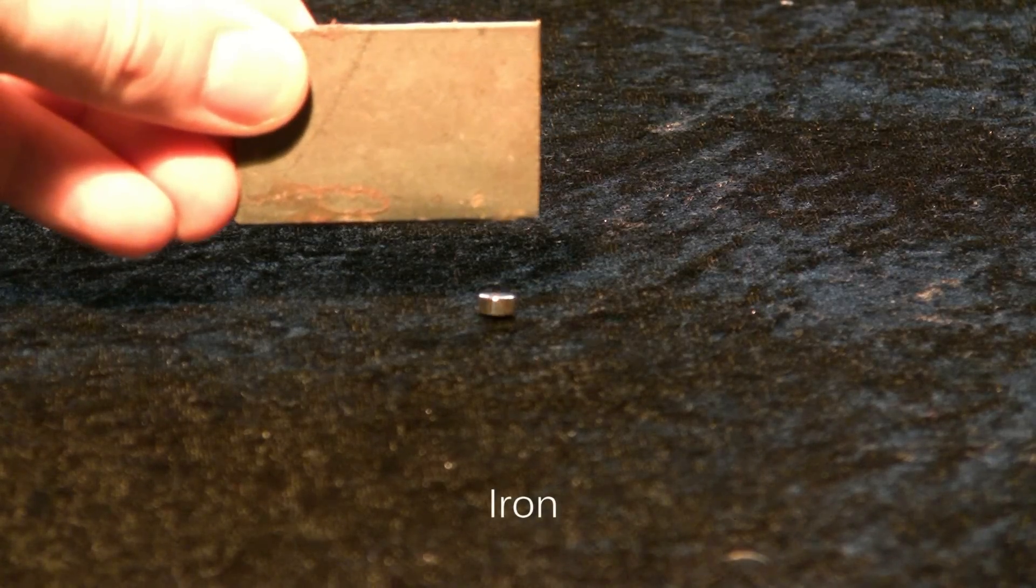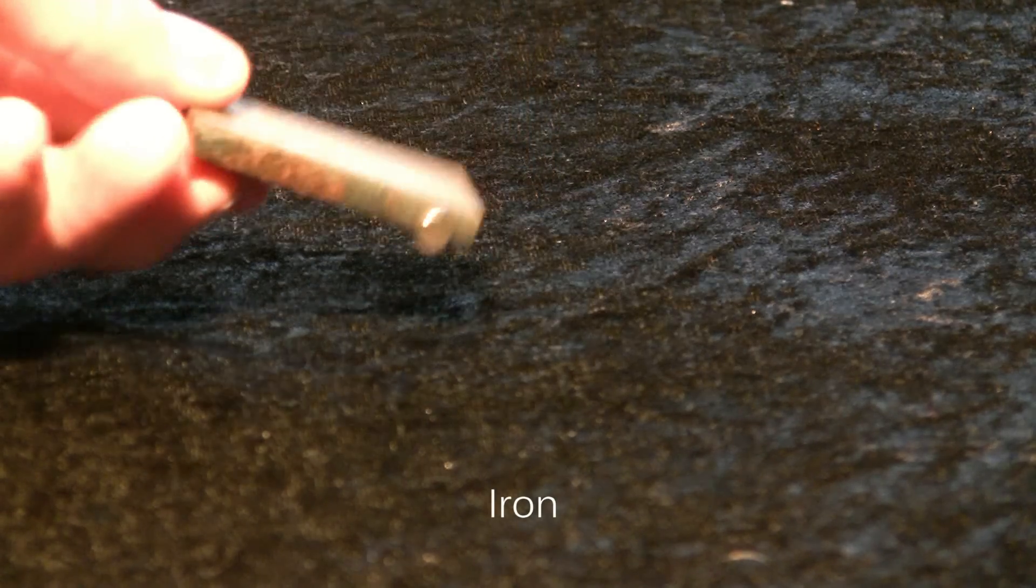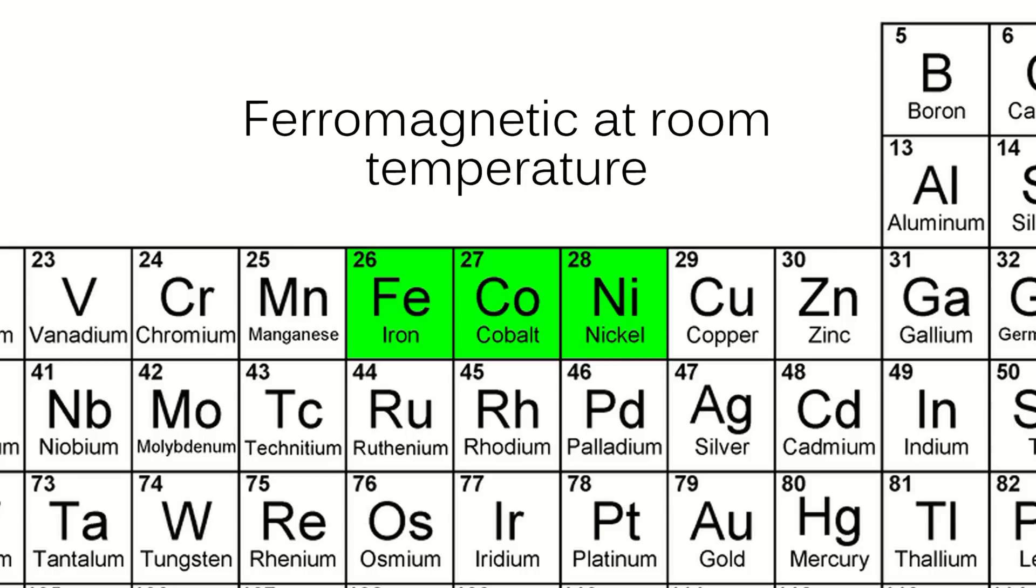Let's start with a simple one. Iron. Iron is ferromagnetic meaning that it will not only be attracted to a magnet, it can be magnetized in itself.